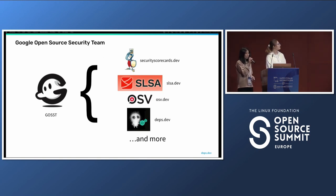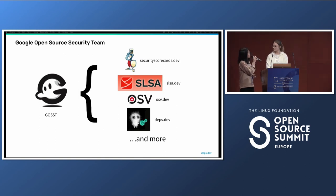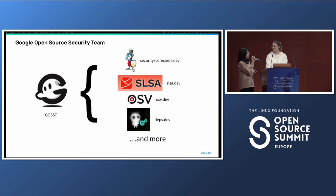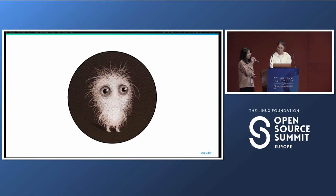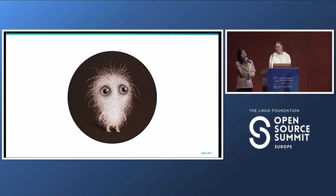Before we start, we wanted to give some background on who we are. Eve and I are on the Google Open Source Security Team, or GHOST for short, and our aim at GHOST is to make open source secure at scale. GHOST works on and contributes to projects like the OpenSSF Scorecard, SALSA, OSV, and also Deps.dev, which is the project that Eve and I work on. At Deps.dev we are particularly focused on being able to understand your open source packages and their dependencies. And just as dependency management can be quite hairy, the Deps.dev mascot pictured here is also rather hairy, and you'll see him featured throughout our slides.